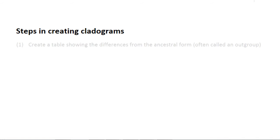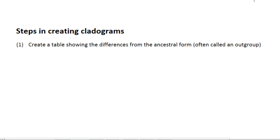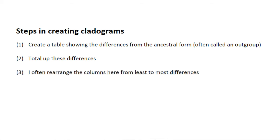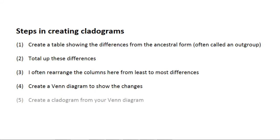There are five steps in creating a cladogram. Firstly, we create a table showing the differences from the ancestral form, which is often called an outgroup. Secondly, we total up these differences. At this point, I often rearrange my columns from the least to the most differences to make it easier. We then create a Venn diagram from these totals, and finally, we create the cladogram from the Venn diagram.